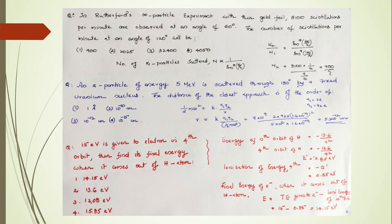Some problematic situations: In a Rutherford alpha particle experiment with a thin gold foil, 8100 scintillations per minute are observed at an angle of 60 degrees. The number of scintillations per minute at an angle of 120 degrees will be... We already learned a concept: the number of alpha particles scattered is proportional to the fourth power of sine of theta by 2. The answer is N2 by N1 equal to sine raised to 4, 60 by 2 by sine raised to 4, 120 by 2. You get the answer. The number of alpha particles scattering is proportional to 1 by sine raised to 4, theta by 2.